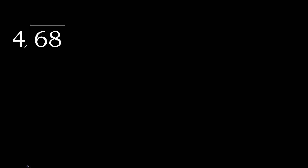68 divided by 4. 6 is not less, therefore with 6: 4 multiplied by which number is nearest to 6 but not greater? 4 multiplied by 2 is 8 — 8 is greater. 4 multiplied by 1 is 4 — is not greater. 6 minus 4 is 2.